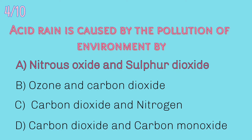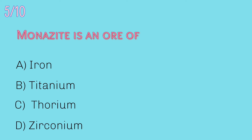Answer: Nitrous oxide and sulphur dioxide. Acid rain is caused by a chemical reaction that begins when compounds like sulphur dioxide and nitrogen oxide are released in the air. The exhaust from cars, trucks and buses release nitrogen oxides and sulphur dioxide into the air. These pollutants cause acid rain.